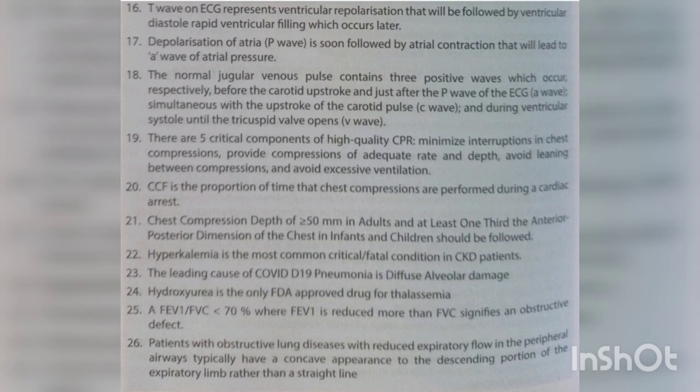The normal jugular venous pulse contains three positive waves: the A wave, occurring before the carotid upstroke just after the P wave of the ECG; the C wave, occurring simultaneously with the upstroke of the carotid pulse; and the V wave, occurring during ventricular systole until the tricuspid valve opens.